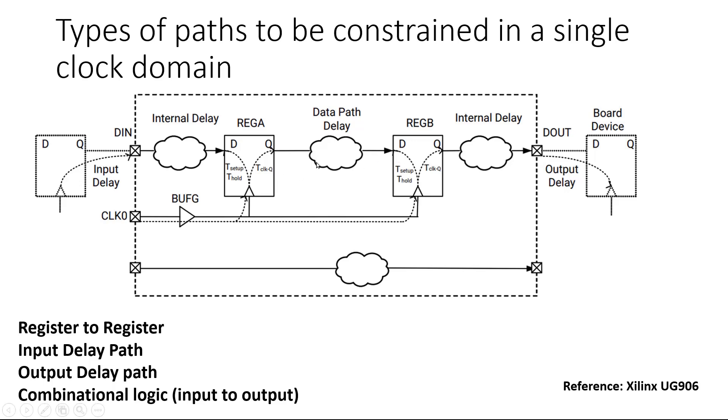This is done with the help of a period constraint. This is done in the FPGA world as well as in the ASIC world. So we need to define the period constraint to check whether all the flip-flop to flip-flop paths are working at the given maximum frequency. In the upcoming videos we will discuss this period constraint in depth.